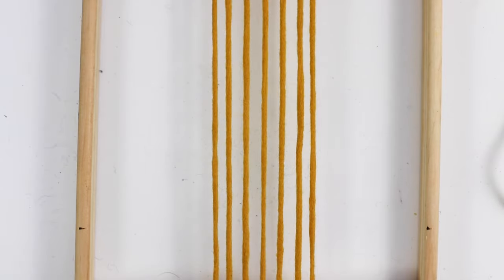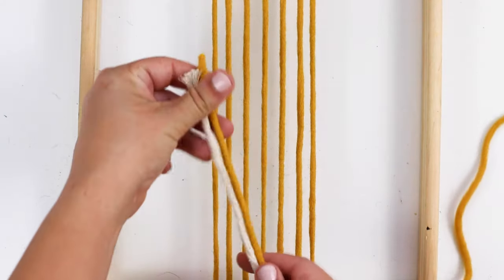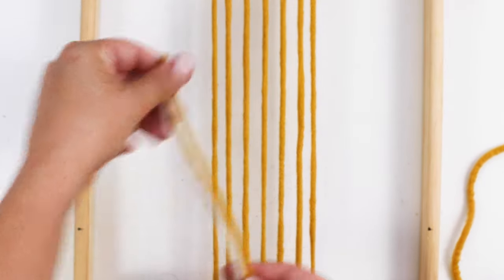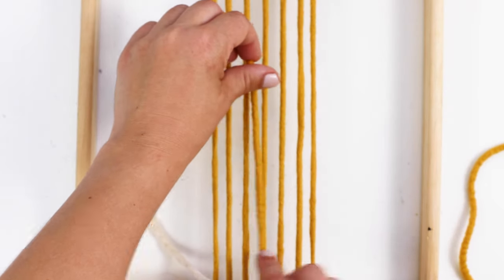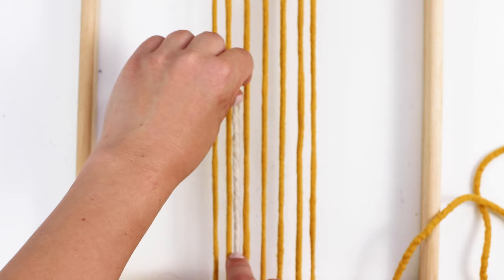Start by making sure your weft is a balanced thickness to work with your warp. Do this by gently tugging on it to mimic the tension of it being woven, and then hold it between two warp strings. If it fills the space without covering the warp strings, then you will have a balanced weave.